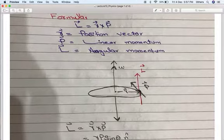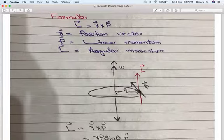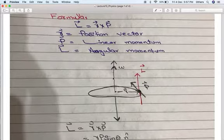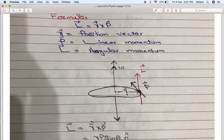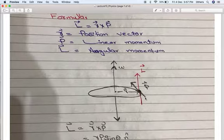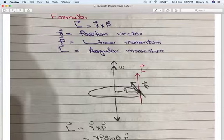Let us consider a body of mass M rotating about an axis of rotation passing through the center. This is the axis of rotation — the line about which the body rotates. The position vector R represents the body's position with respect to the axis of rotation. When the body moves, its tangential velocity or linear velocity is directed along the tangent to the circle.